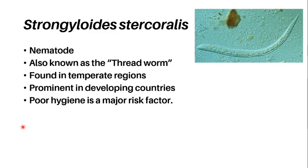Strongyloides stercoralis is a nematode belonging to the phylum Nematoda. It is also known as the threadworm. Like the previous parasites we have discussed, this worm is also found in the tropics or in places with warmer climates, and is once again prevalent in developing countries due to poor sanitation techniques.